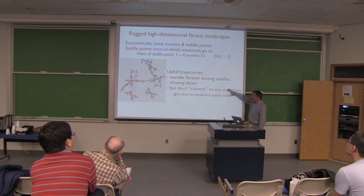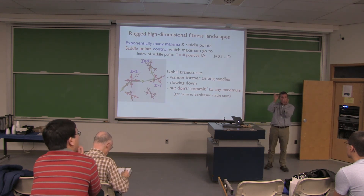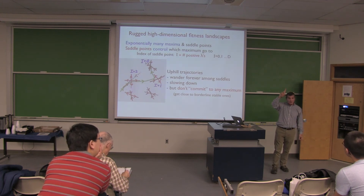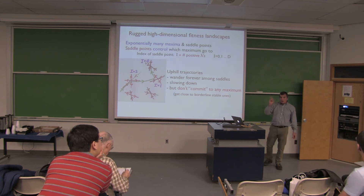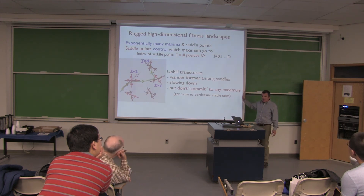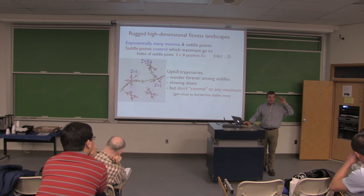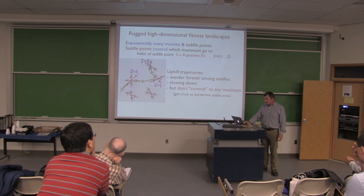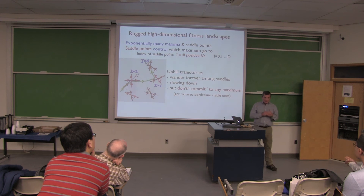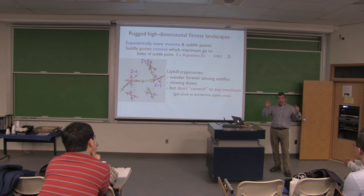High-dimensional landscapes have exponentially many maxima and saddle points. The saddle points control which maxima the flows go to when going uphill, and there are saddle points of all indices. In low dimensions, an uphill flow will eventually start getting near one of the maxima, be no longer controlled by saddle points, and converge on that maximum. But in very high dimensions that doesn't happen — you just keep wandering around the saddles, gradually slowing down, gradually getting higher in the landscape, but never really committing to any maximum. This is a somewhat different picture of what dynamics should look like even in a constant landscape.